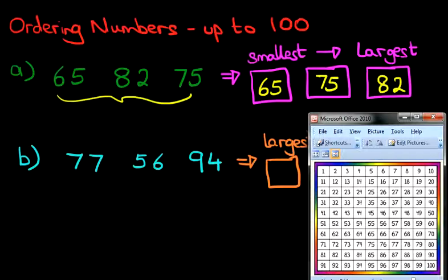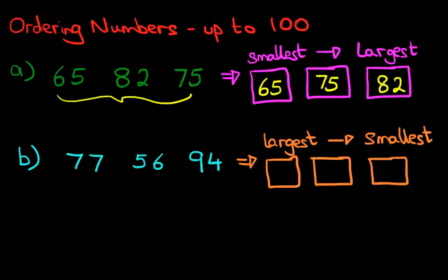And don't forget, we're looking at the largest number first. So, which one appears at the row at the bottom? Well, that's nice and easy. It is 94. So, that is our largest number, 94.